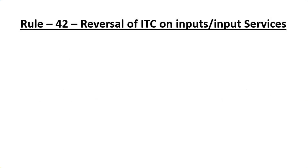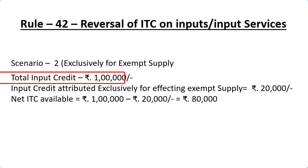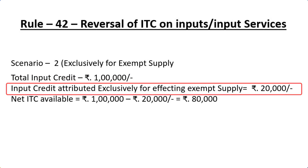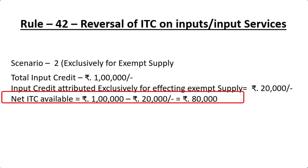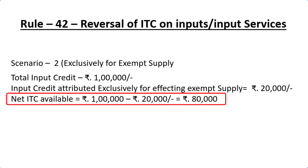Now let us see the second scenario. Under the second scenario, the total input credit is again one lakh and the input attributed exclusively for effecting exempt sale is rupees 20,000. The net input credit will be total input credit minus the input towards effecting exempt supply. The net ITC to be claimed will be 80,000, and rupees 20,000 has to be reversed in this case.